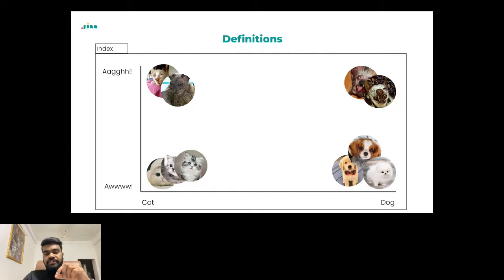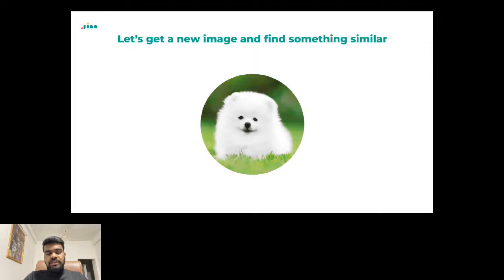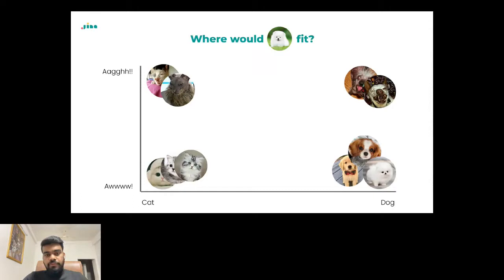At index time, when you index the data using embeddings, it gets clustered into different categories. So whenever you search, it finds the closest match and fetches the appropriate results. Let's look at a query image — a cute puppy. We send it as a query and fetch the relevant results, the similar images. Even though it's a little complicated to see among all four categories where it should fit, that's how a neural search engine works — it uses the power of neural networks to find the relevant images for this cute little puppy.